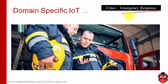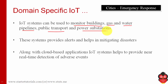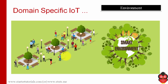There is also emergency response. IoT systems using different sensors can be used to monitor buildings, gas and water pipelines, public transport, and power substations. Through the data gathered and data analytics, alerts can be generated for mitigating disasters. Those are the applications in smart cities.